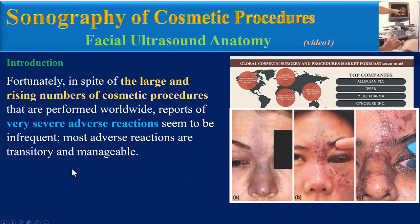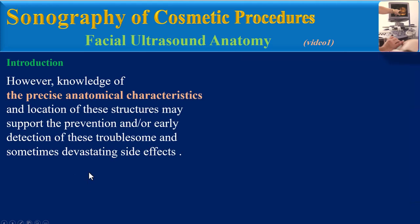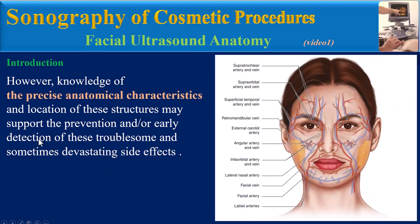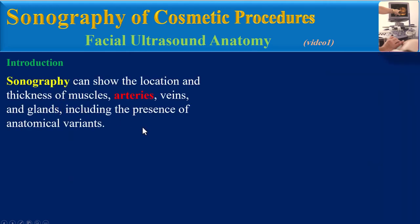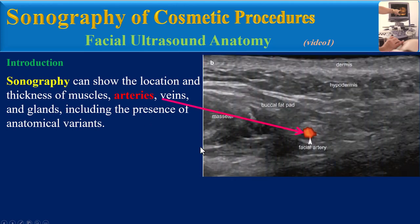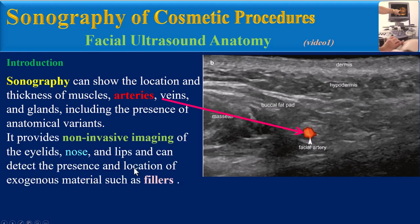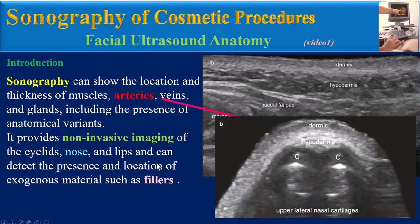Fortunately, despite the large and rising numbers of cosmetic procedures performed worldwide, reports of very severe adverse reactions seem to be infrequent, and most adverse reactions are transitory and manageable. However, knowledge of precise anatomical characteristics and the location of these structures may support the prevention and early detection of these troublesome and sometimes devastating side effects. Sonography can show the location and thickness of muscles, arteries, veins, and glands, including anatomical variants.